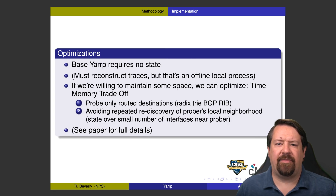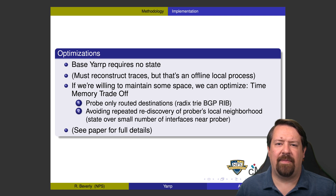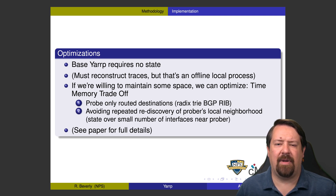YARP also introduces a couple of features to help optimize its performance and reduce any negative impacts on the network. One of these is to read in the BGP RIB so that it only probes routed destinations. The second is that it observes the local neighborhood, and so if it's repeatedly getting back the same routers over and over, it will stop re-probing the first few hops of the paths.